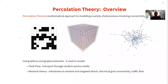An overview of percolation theory: it's a mathematical approach to modeling a variety of phenomena that involve connectivity of agents in a given system. It's used to model fluid flow through random porous media and a large swath of phenomena modeled with network theory, such as assessing the robustness to random or targeted attack or failure in an electrical grid or a traffic flow network. We'll go through a few of these sequentially.